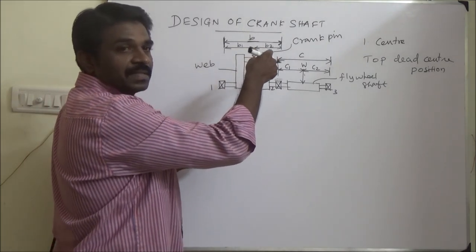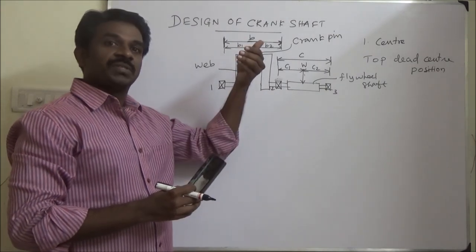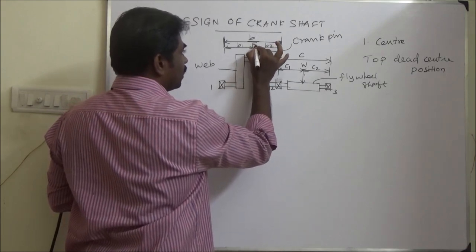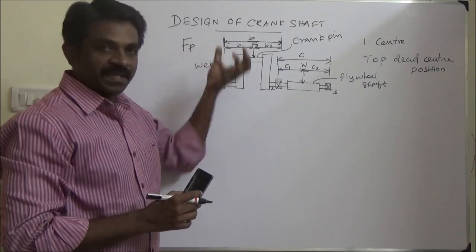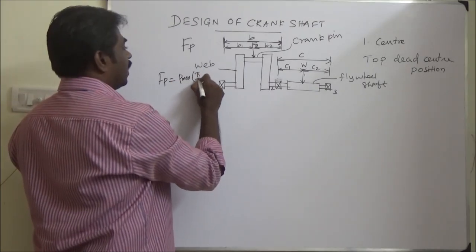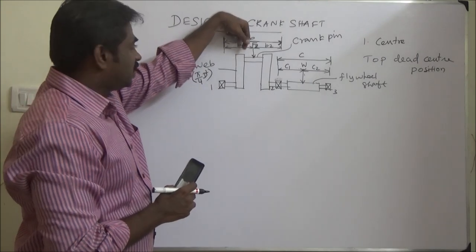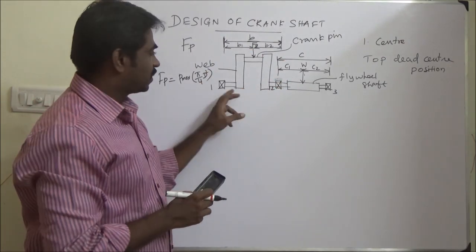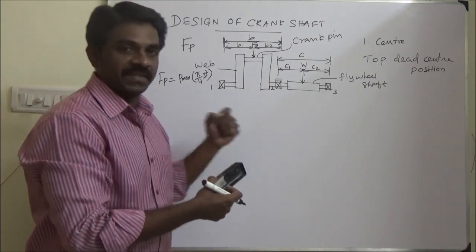The crankshaft is supplied with a load coming from the connecting rod or from the piston. This force, called Fp, is the force coming from the piston — nothing but the pressure multiplied by the area of the piston. This force acts vertically downward. Analyzing the problem as such is very complex because there are three supports, and analyzing all three simultaneously would be tedious.